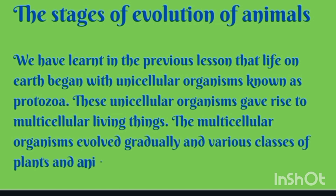The stages of evolution of animals: we learned in the previous lesson that life on Earth began with unicellular organisms known as protozoa. These unicellular organisms gave rise to multicellular living things. Multicellular organisms evolved gradually, and various classes of plants and animals came into being. As in Class 5 we are studying human beings, we will focus on the classes of animals.